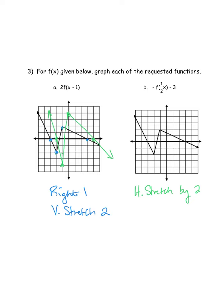The next thing in order of operations after the parentheses is the negative out front. That's applied to f, which is the y value, so that's going to be a reflection — the top becomes the bottom and the bottom becomes the top, a reflection over the x-axis. And then the final thing is the minus three at the end of the function, so that's going to be a down three.